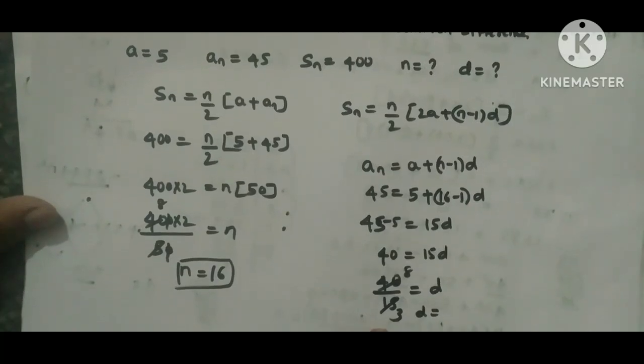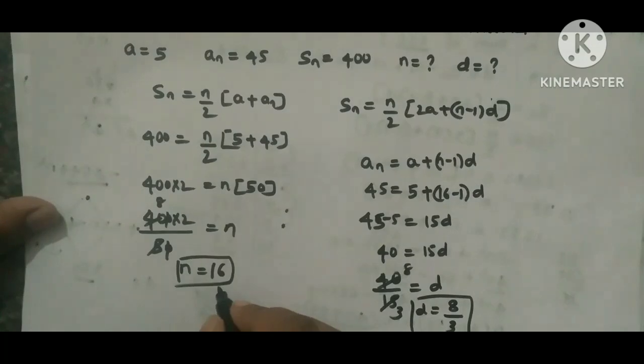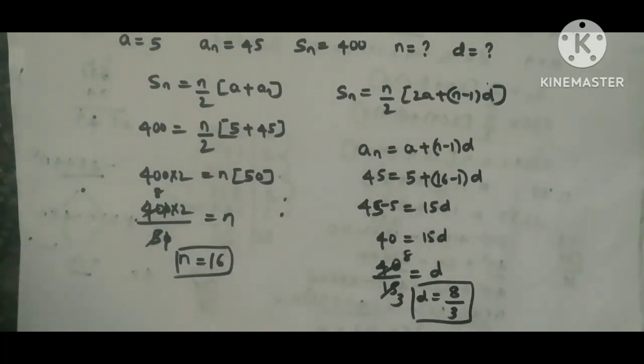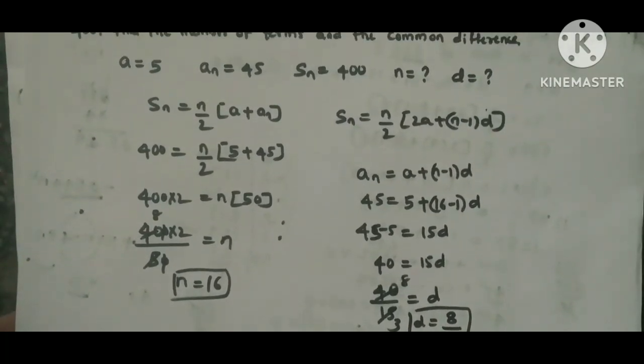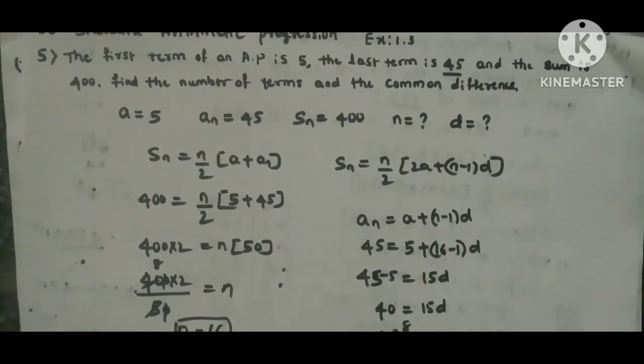So here, number of terms are 16 and common difference is 8/3. Like this we need to solve this sum. If you have any doubts, please comment and ask me. If you like this video, please like, share it to your friends and subscribe to my channel. Thank you.